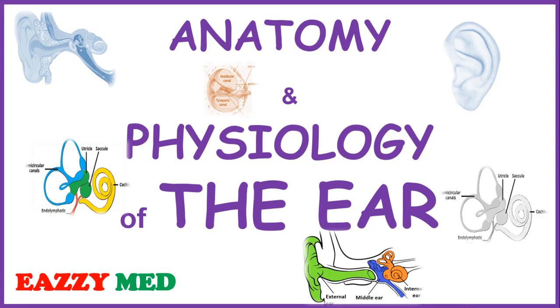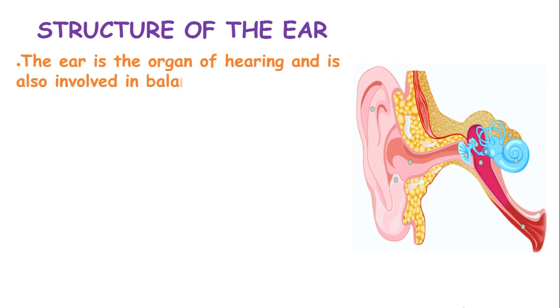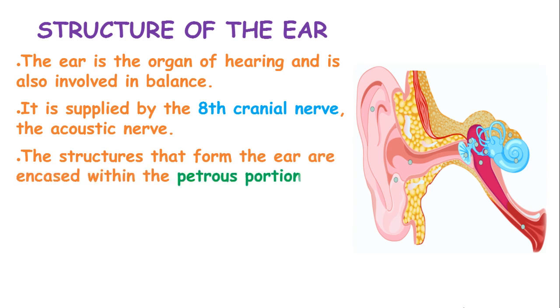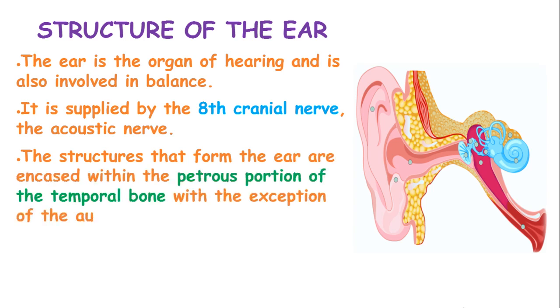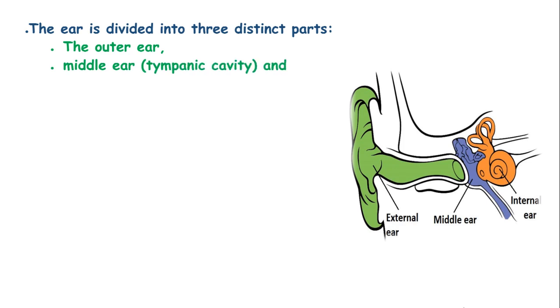Anatomy and Physiology of the Ear. The ear is an organ of hearing and also involved in balance. It is supplied by the 8th cranial nerve, known as the acoustic nerve. The structures which form the ear are encased in the petrous portion of the temporal bone, with the exception of the auricle or the pinna. The ear is divided into three distinct parts: the outer ear or external ear, the middle ear known as the tympanic cavity, and the inner ear.